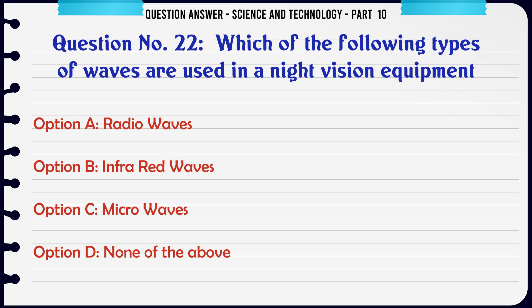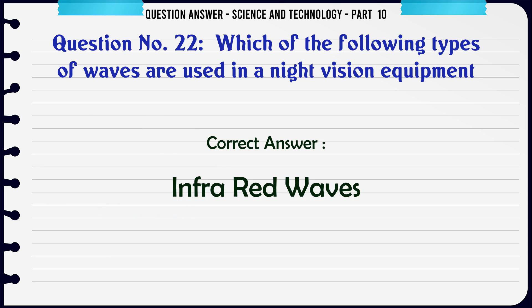Which of the following types of waves are used in a night vision equipment? A. Radio waves. B. Infrared waves. C. Microwaves. D. None of the above. The correct answer is Infrared waves.